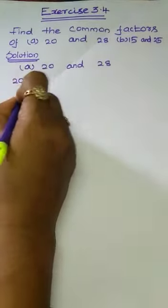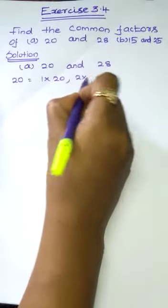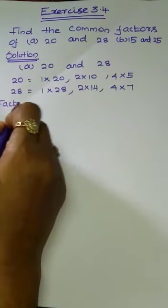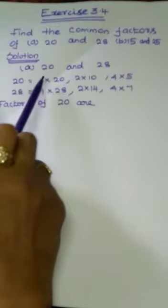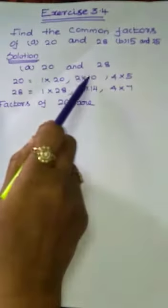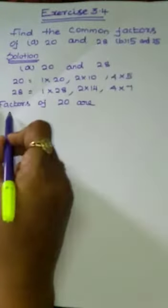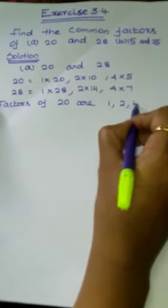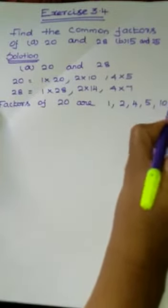How can we write 20? 1 × 20, 2 × 10, 4 × 5. How can we write 28? 1 × 28, 2 × 14, 4 × 7. So the factors of 20 are 1, 2, 4, 5, 10, and 20. The factors of 28 are 1, 2, 4, 7, 14, and 28.